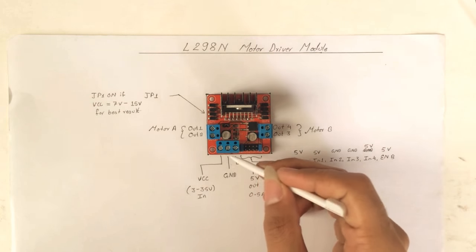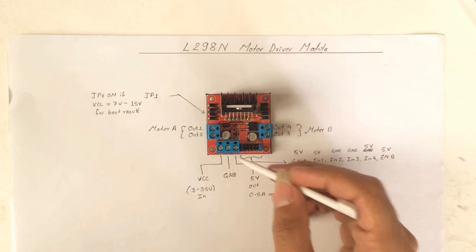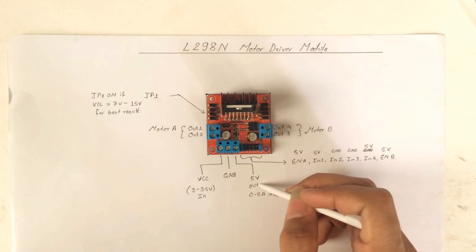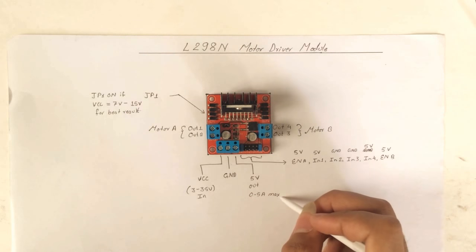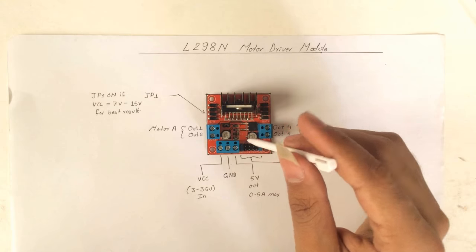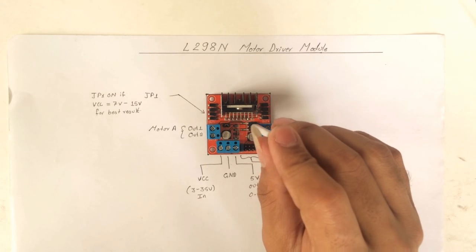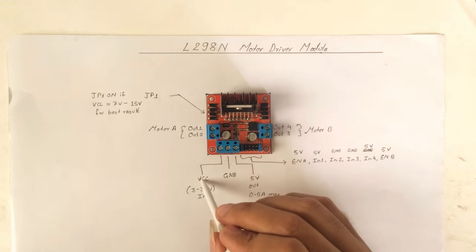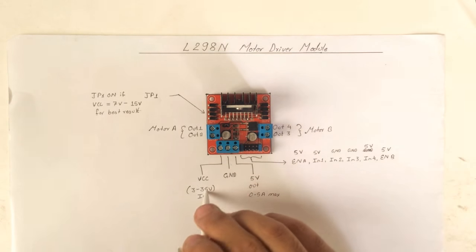Our third terminal is 5 volt. This is 5 volt output, it can give 0.5 ampere at maximum. This portion or this 5 volt is regulated with this 5 volt regulator IC. This is our regulator IC which accepts input from our VCC, so the maximum limitation is 35 volt.